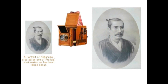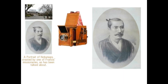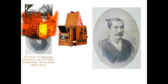もともとオリジナルの肖像画はあったのですが、明治時代に写真に撮られました。そして現在私たちが知っている織田信長の肖像画は、その時に撮られた写真ということになります。オリジナルの肖像画は火災とともに消失したということになっています。ここが重要です。